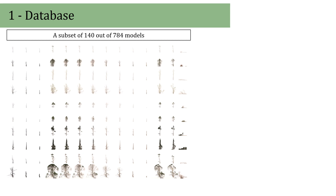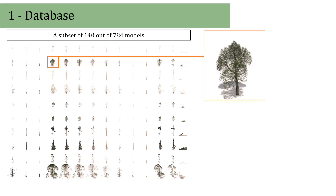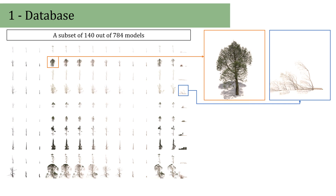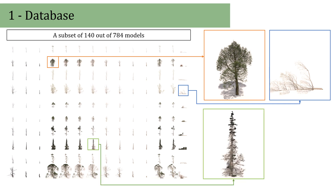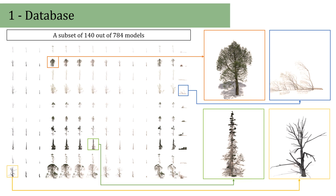To generate our database, we perform a simulation with different environments and events. We obtain a total of 784 models defined by 4 ages for 7 species and 14 decay and disturbance effects within two environments.